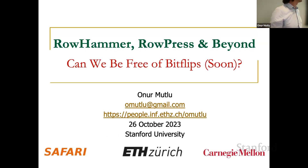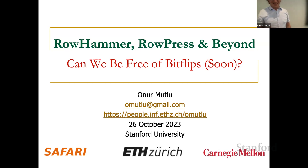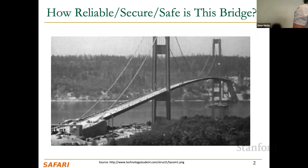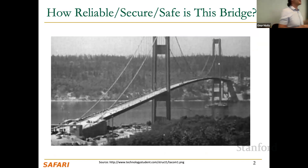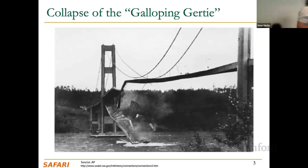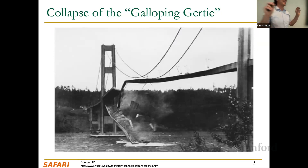I'm going to talk about RowHammer, RowPress, and beyond. This is the Tacoma Narrows Bridge — how many people know it? How many people have been over it? Probably zero, because this is what happened to that bridge in 1940. It's a bit flip in important infrastructure, and it's taught in civil engineering classes as a classic example of how not to build bridges.